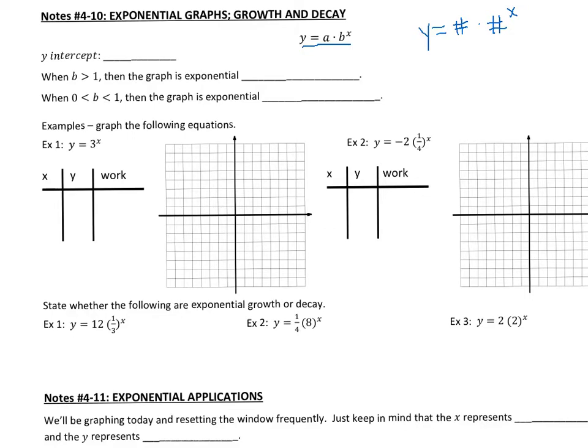When we look at this equation, we can find the y-intercept. The y-intercept is going to be represented by the letter a. Now, the reason why this represents the y-intercept is because the y-intercept has an x value of 0. So if I plug in 0 for my x value, y equals a times b to the 0 power.